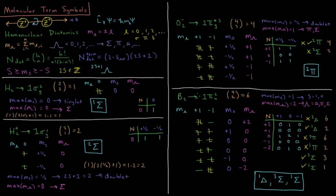For B2, the only partially filled subshell is 1 pi u squared. There are 4 choose 2 equals 6 ways to arrange two electrons in four spin orbitals. For a pi orbital, m sub l equals plus or minus 1. The maximum m sub s is 1, meaning we can have S equals 1 or 0 — either a singlet or a triplet. The maximum m sub lambda equals 2, meaning lambda can equal delta, pi, or sigma.